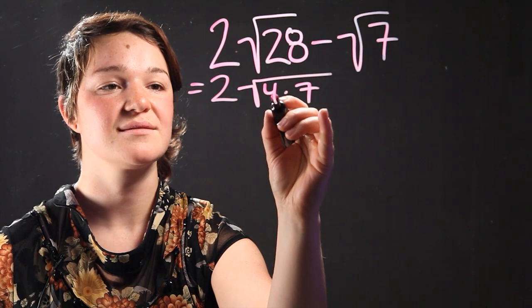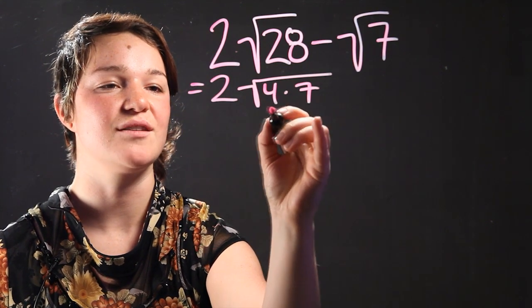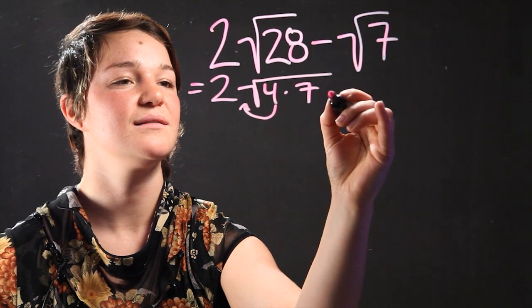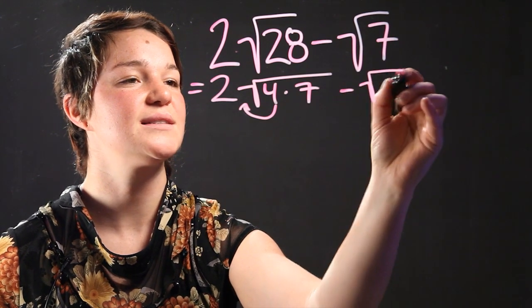So this would actually be equal to 2 times the radical of 4 times 7. We know that 4 can be simplified and taken out of the radical. We're going to do that. And this is still minus square root of 7.